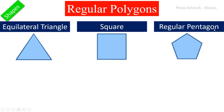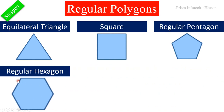Next one is a regular pentagon. Pentagon means it consists of five sides. All sides are equal, so it is called a regular pentagon.